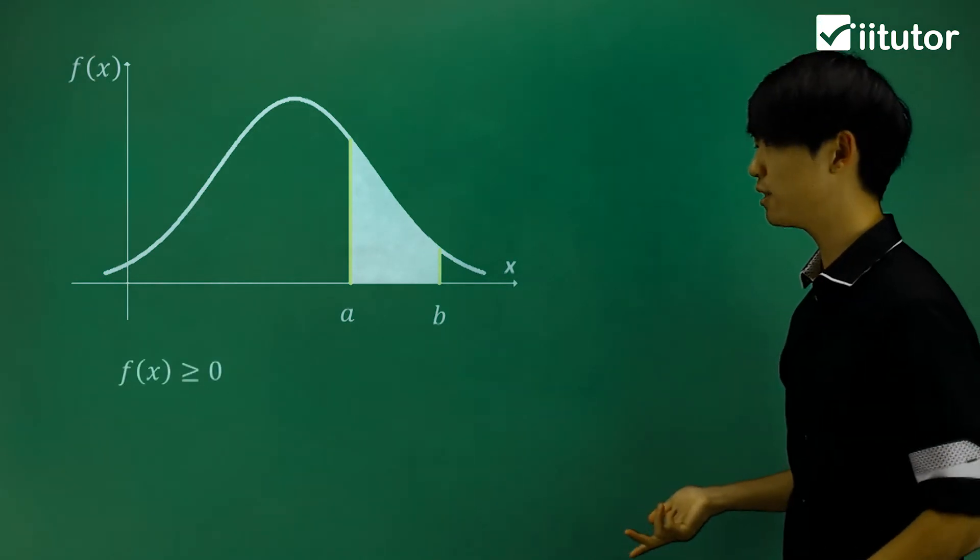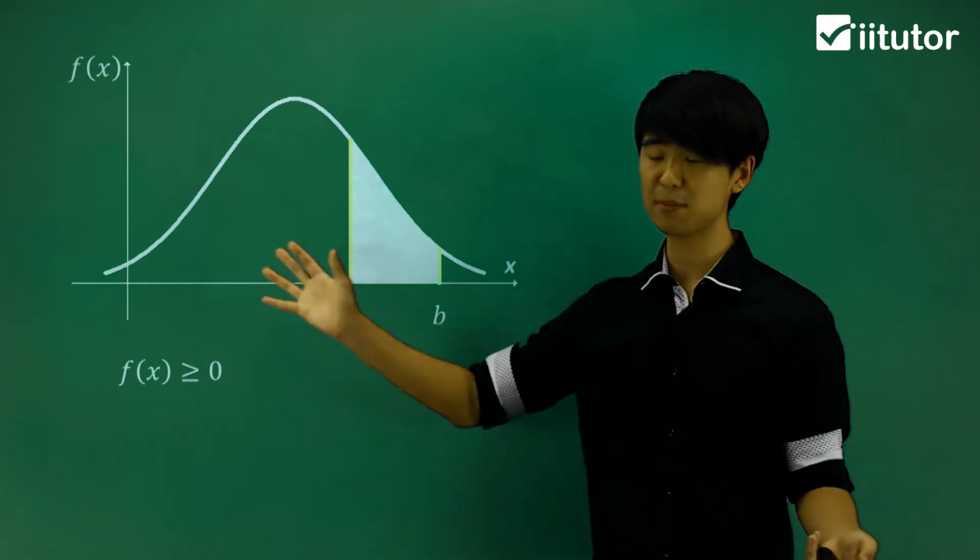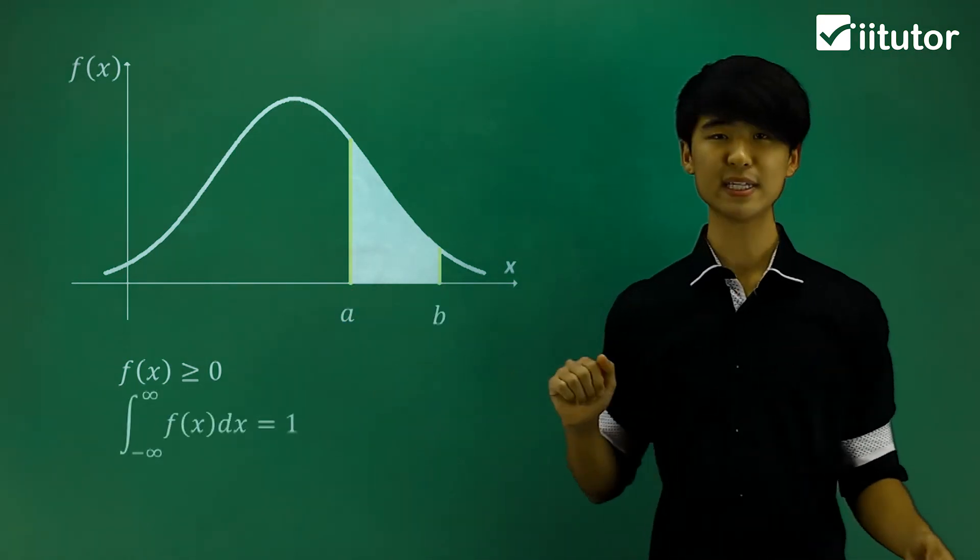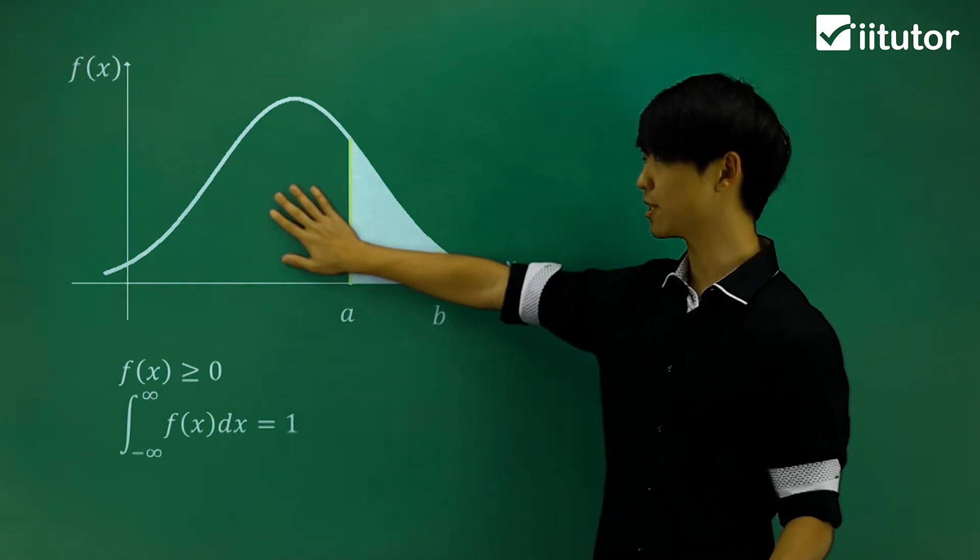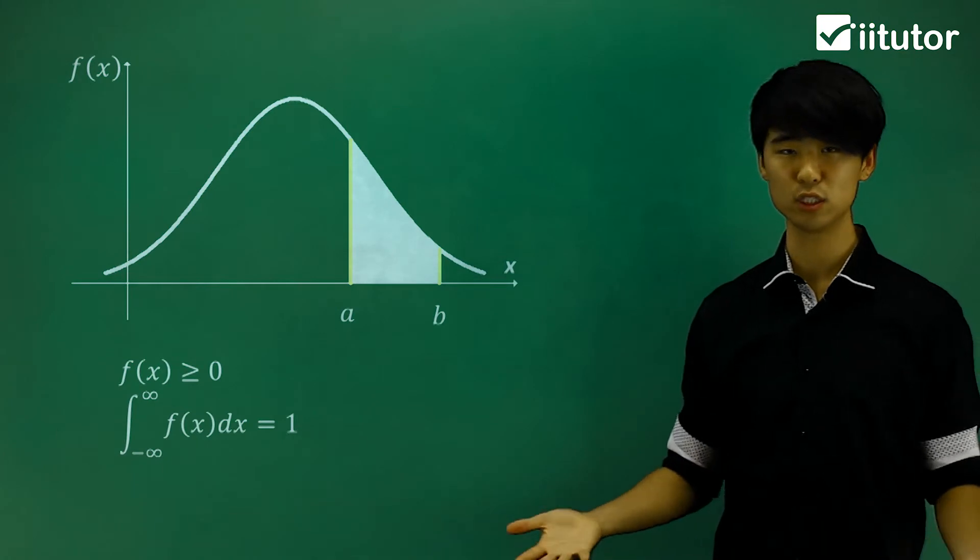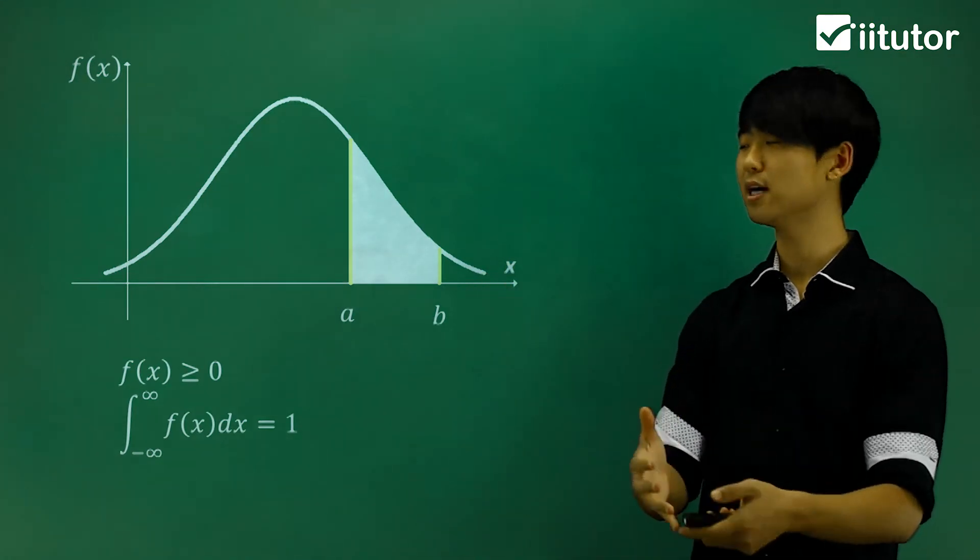The first one being that the graph should be greater or equal to zero. Again this is just a way of saying my probabilities should be greater or equal to zero. We don't want any negative probabilities. Now my second condition is that the area under my curve should total 1. In any event or situation, we have different probabilities, but adding all the probabilities up, we should get 1.